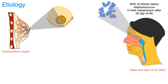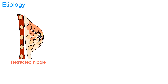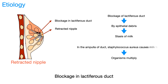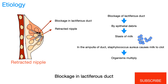In case of a retracted nipple, the lactiferous duct may get blocked by epithelial debris. The accumulation of milk in the ampulla of the duct is prone to colonization by Staphylococcus aureus, where it multiplies.